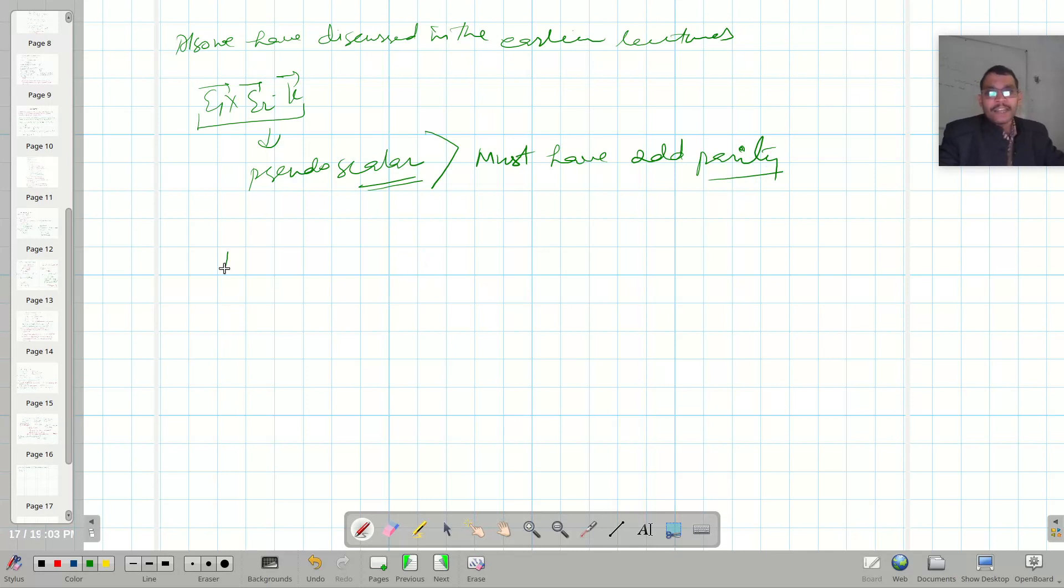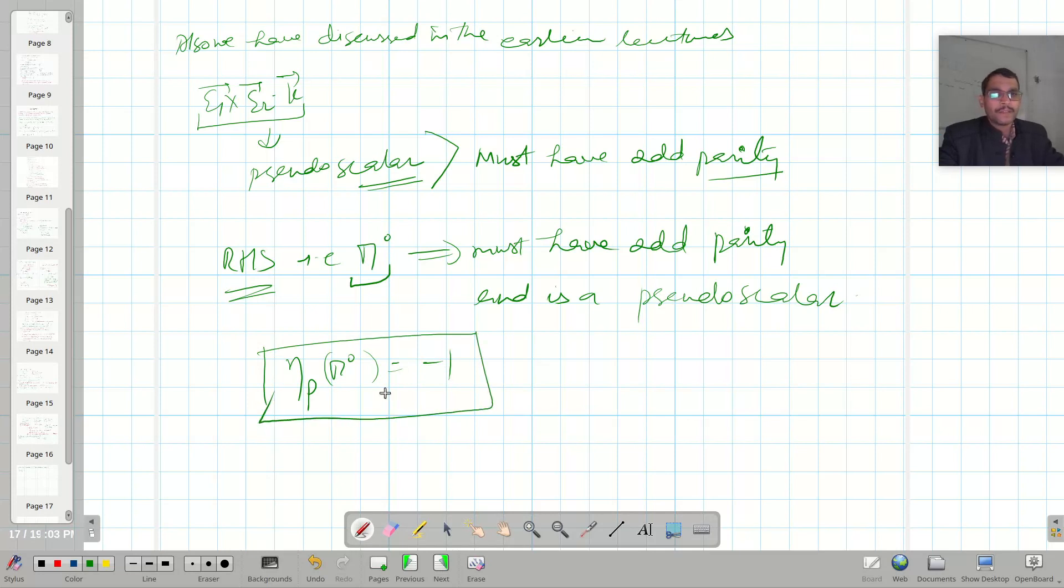Thus right hand side, that is pi0, must have odd parity and is a pseudo scalar. Therefore, parity of pi0 is basically minus 1. It has odd parity and is also a pseudo scalar.